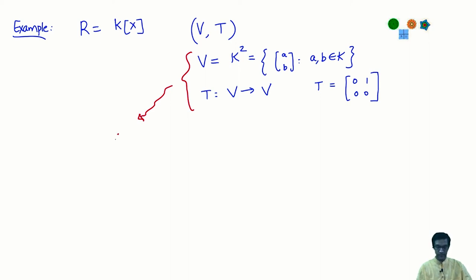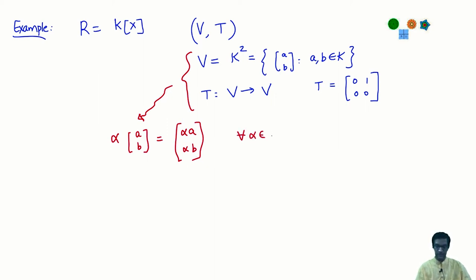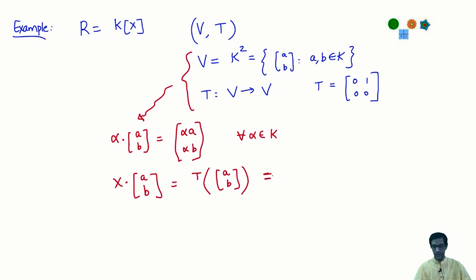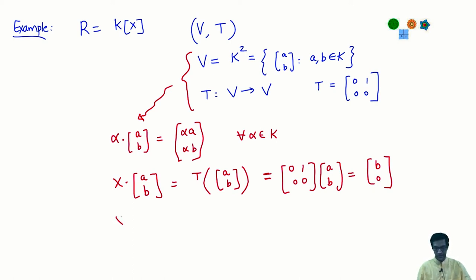Recall we have looked at this example before when we talked about quotient modules. The translation from (V, T) to a K[x]-module is: a scalar α from K acts on V as usual scalar multiplication, and x acting on an element of V is given by the action of T. In this case, T sends (a, b) to (b, 0). It is easy to check that T² is the zero matrix, so x² and all higher powers of x act as 0.